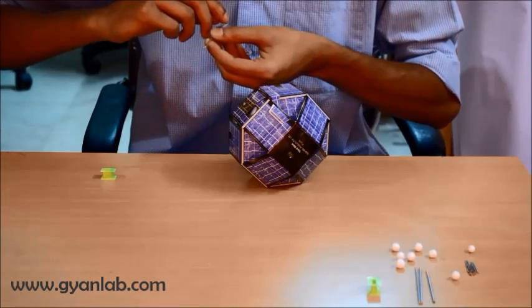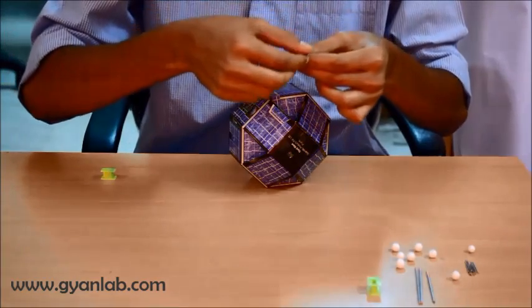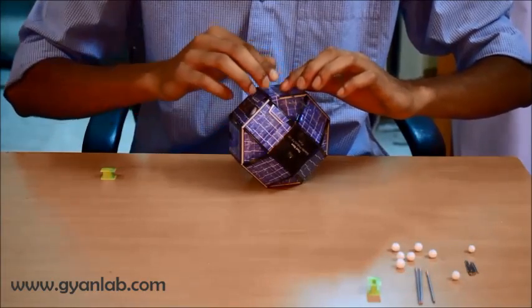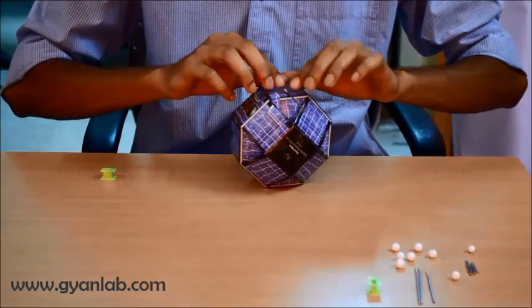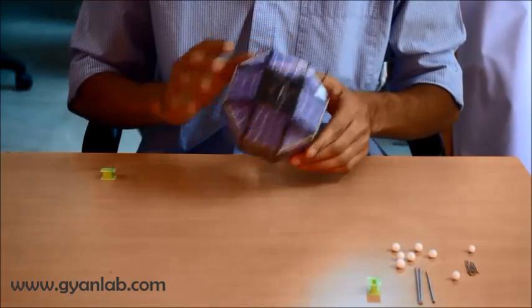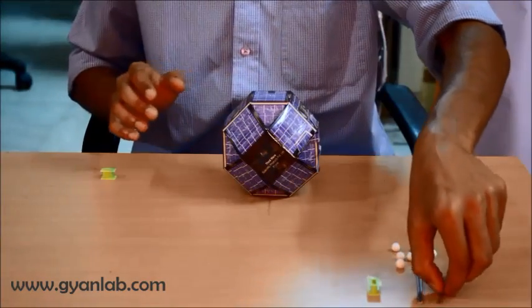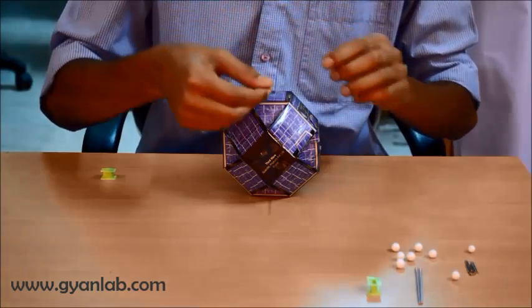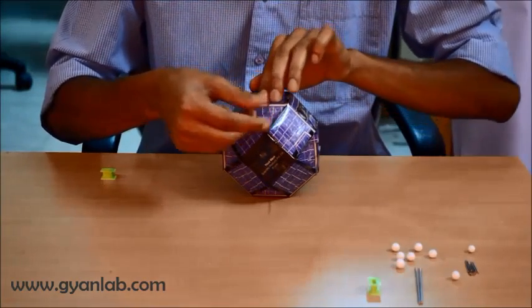Before we do that, let's try and fit the metal rods onto the satellite on four different corners. These are basically the antennas of the Aryabhata satellite. We'll repeat the same thing at four different opposing sides since the satellite had four different antennas attached to it to send back signals to Earth.